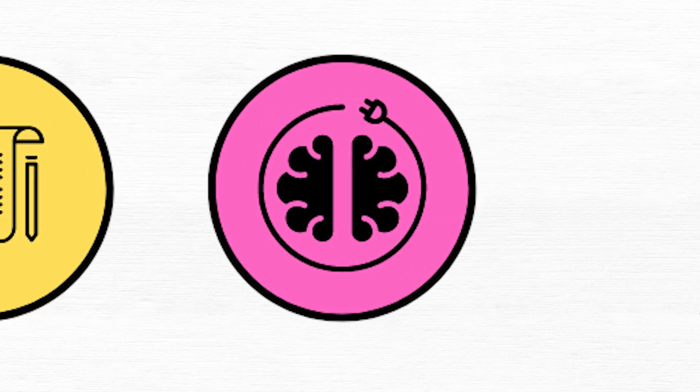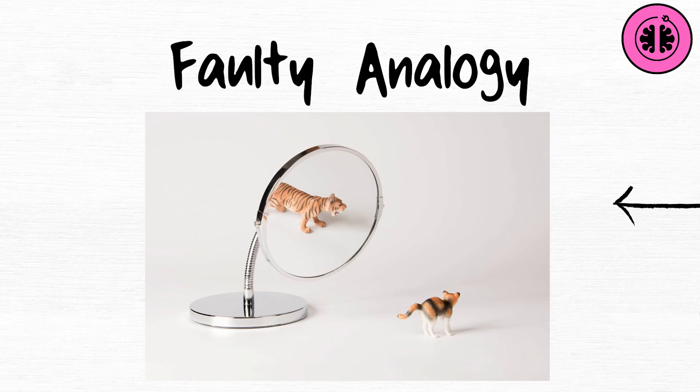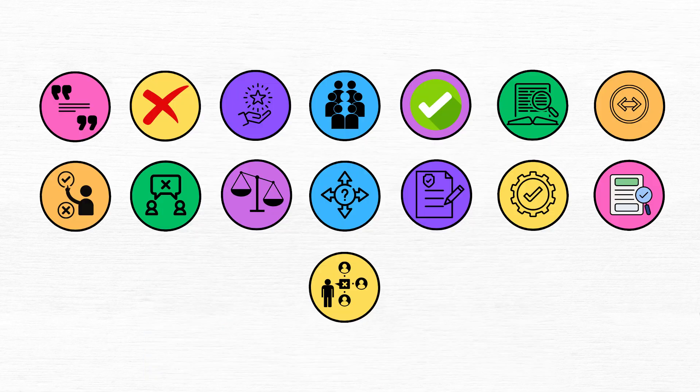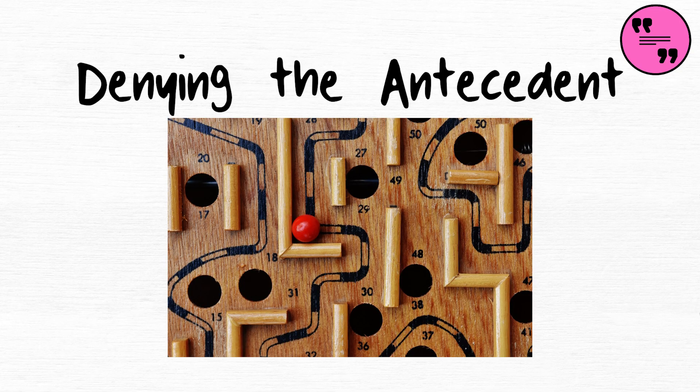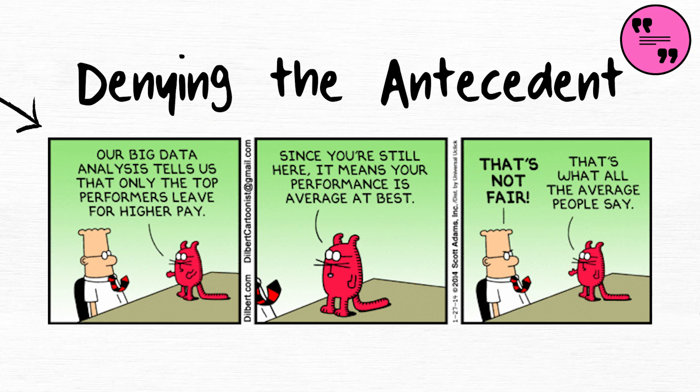Faulty analogy. A faulty analogy is saying that two things are alike in all aspects. Denying the antecedent. The denying the antecedent fallacy infers the inverse from an original statement.